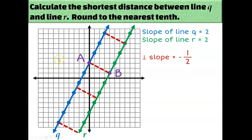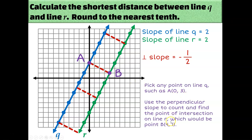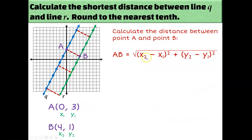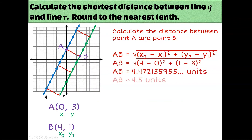So let's say I wanted to go with these two points. I'm going to call this point A and this point B — those are the points of intersection between the perpendicular line and the two parallel lines. A is the point (0, 3) and B is the point (4, 1). So to calculate the shortest distance between line Q and line R, I'll just calculate the distance between A and B by plugging the numbers into the distance formula. When I simplify, I get approximately 4.5 units.